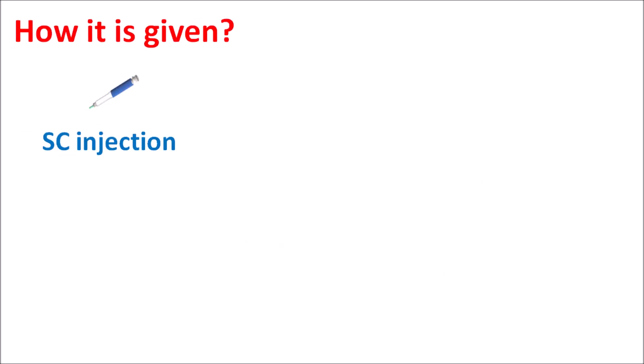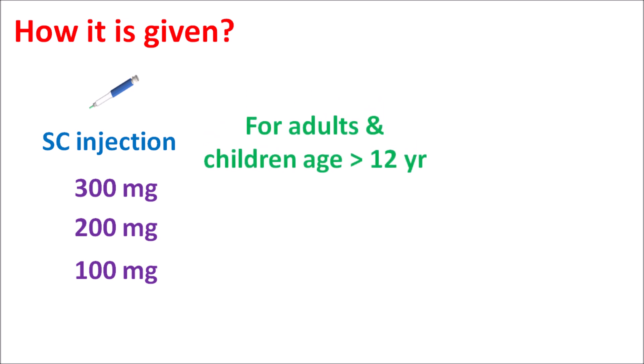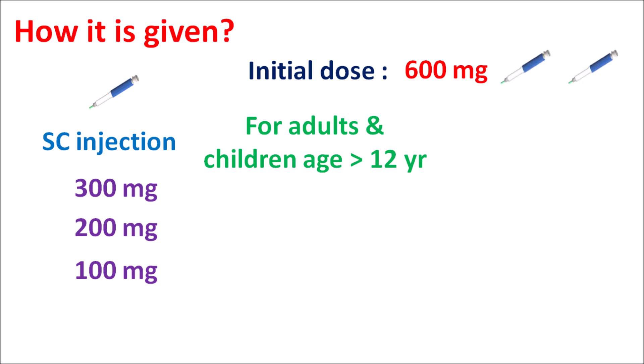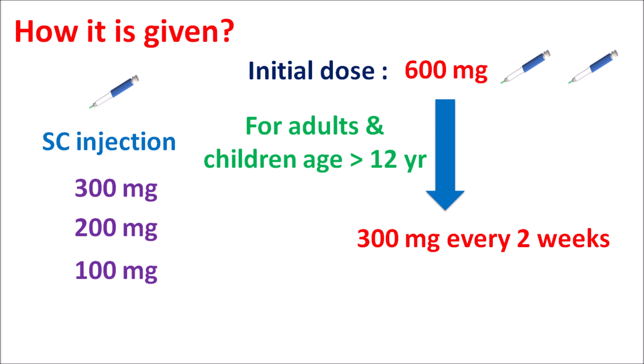This drug is given as a subcutaneous injection and is available as pre-filled pens or pre-filled syringes at strengths of 300 mg, 200 mg, and 100 mg. The 100 mg dose is available as a pre-filled syringe only. For adults and children aged 12 years or older, the drug is initiated at a loading dose of 600 mg as two injections of 300 mg each, given at different sites. The maintenance dose is then 300 mg every two weeks.